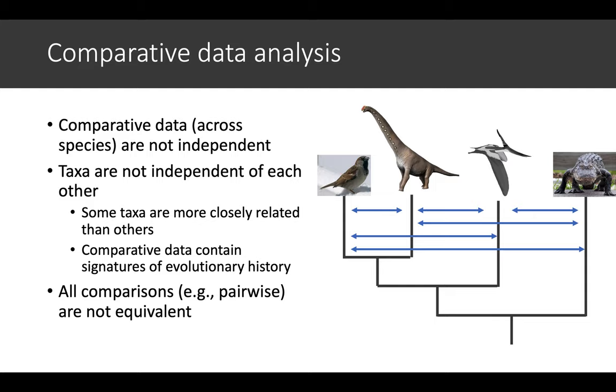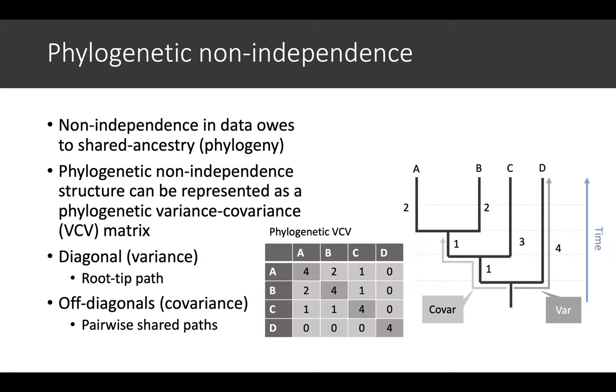So the structure of the non-independence is that you have this hierarchical phylogenetic non-independence that contains signatures of evolution. This non-independence, which is often called phylogenetic non-independence, owes to shared ancestry.